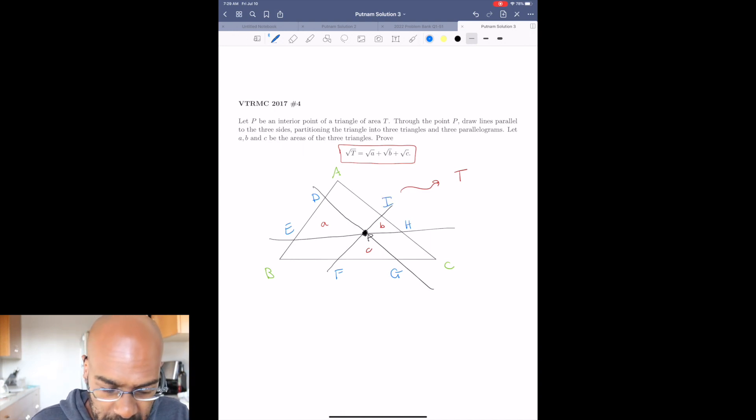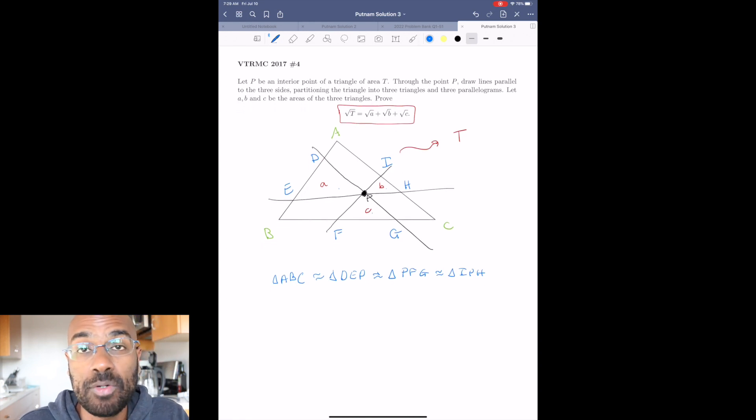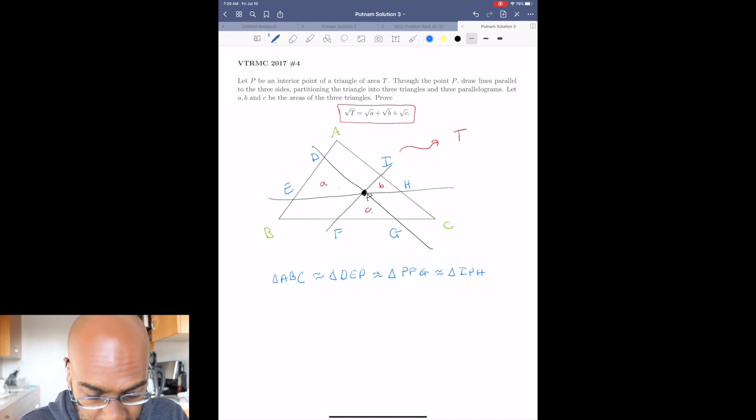So we notice that we have a bunch of similar triangles here. So the triangle ABC itself is similar to all these three triangles with areas A, B, and C respectively. So I should say similar here, not congruent. So this is similar to triangle DEP, and that's similar to triangle PFG, and that's similar to triangle IPH. So the similarity might actually help us in a way to figure out some relationships between things.